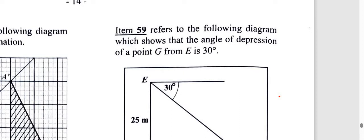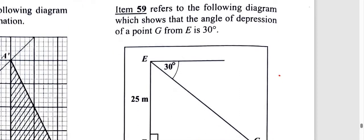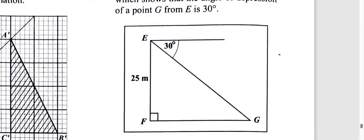Question 59, almost there. We have this diagram with an angle of depression. You can definitely see a Z shape here. The alternate angles in the Z are basically equal as long as these two lines are parallel.